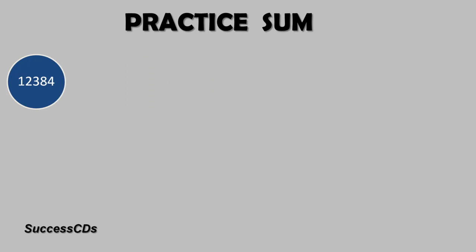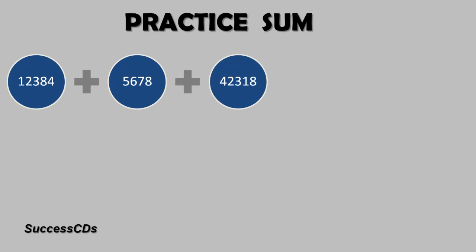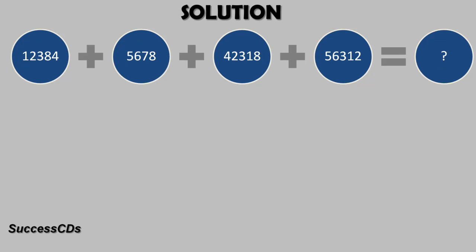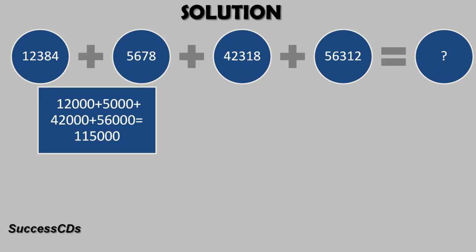Another sum for your practice: 12,384 plus 5678 plus 42,318 plus 56,312. You have to find this answer. The solution: add up the thousands place first — 12,000, 5000, 42,000, 56,000 — they give you a total of 1,15,000.